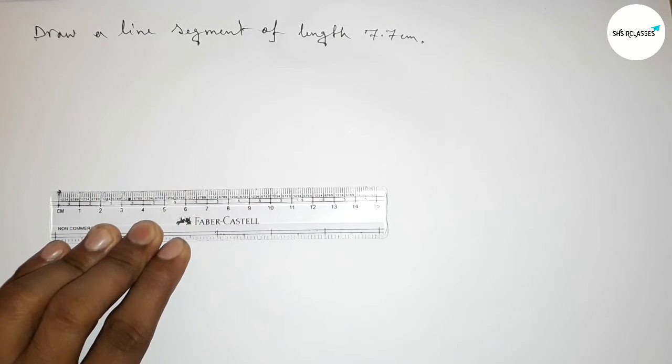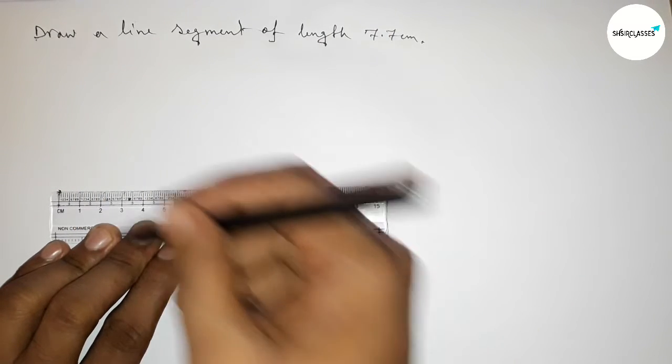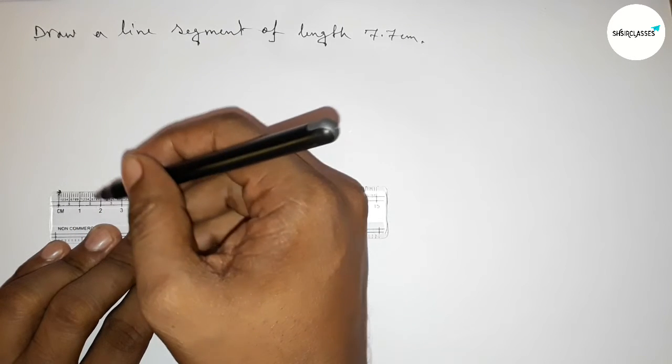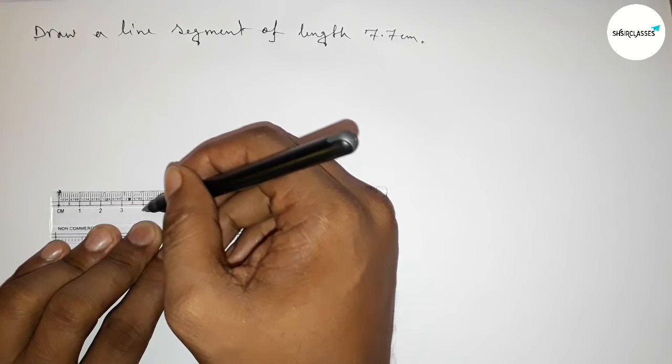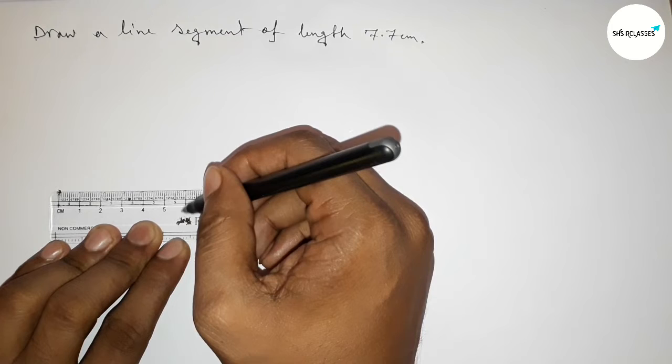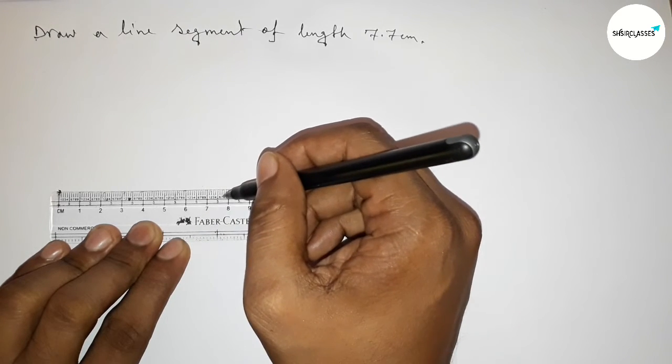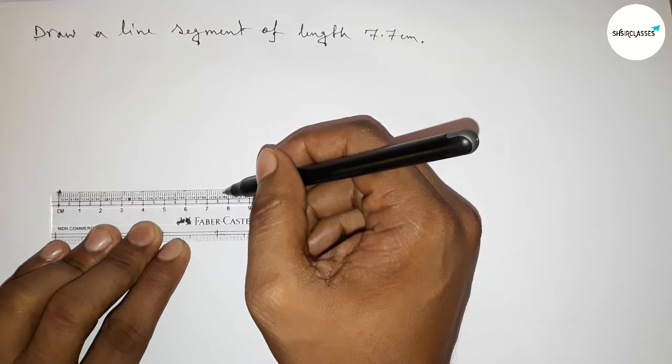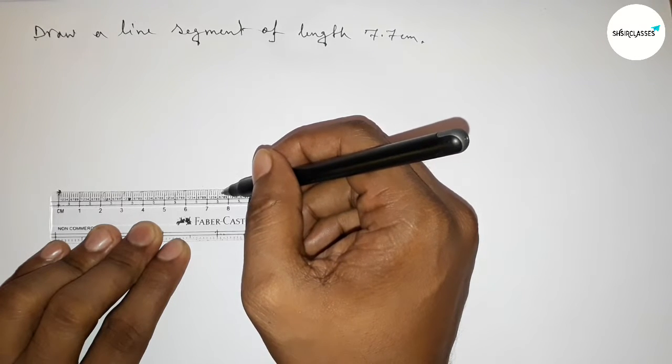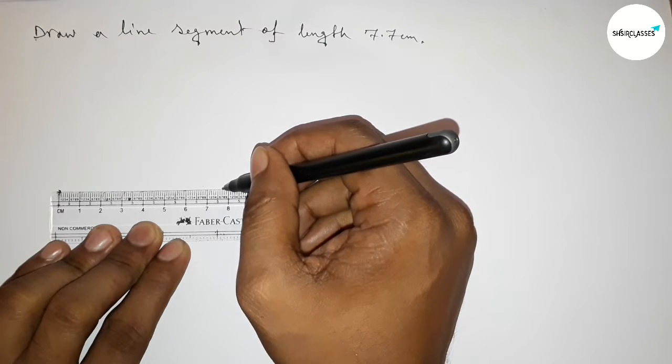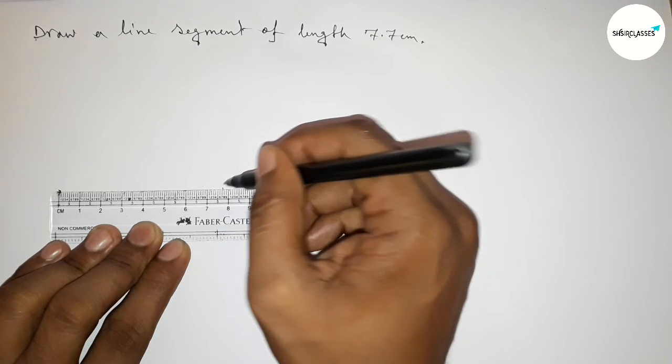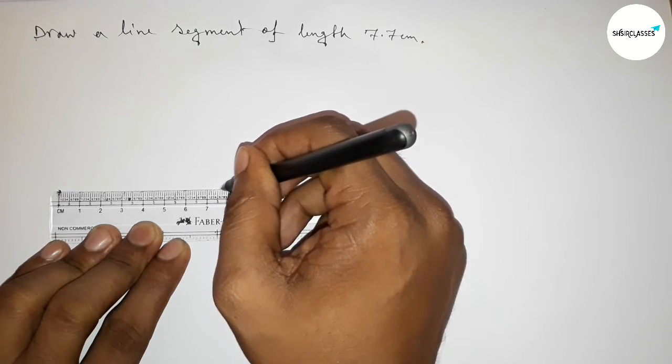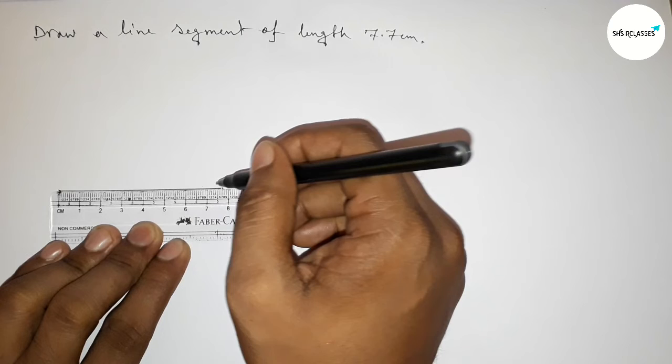First marking zero, then counting: zero, one, two, three, four, five, six, seven. This is 7.5 and this is 7.7 centimeters length. Now marking 7.7 and joining the line perfectly.